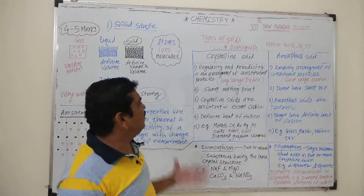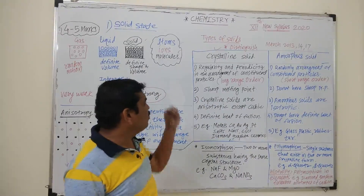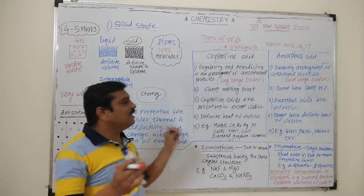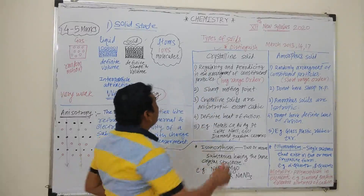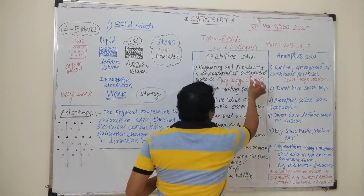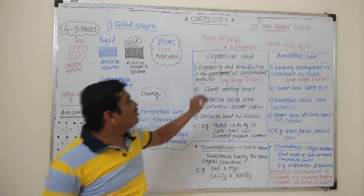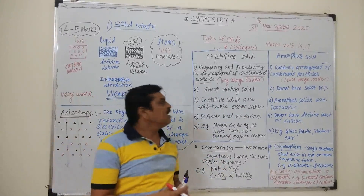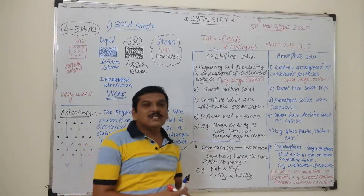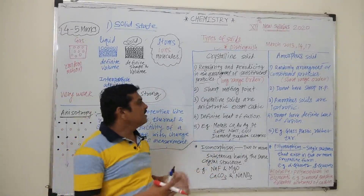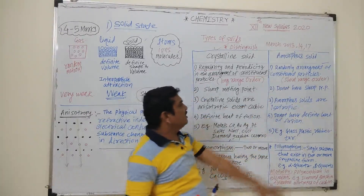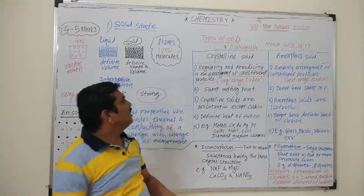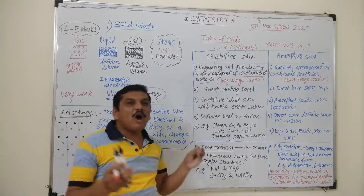Distinguish between crystalline solids and amorphous solids. The first point is that in crystalline solids, atoms, ions, or molecules are arranged in a regular manner — there is regularity in the arrangement of constituent particles, known as long range order. Amorphous solids are solids in which constituent particles are randomly arranged, meaning there is only short range order among the particles.